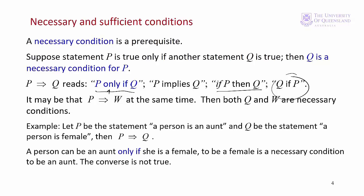We can think of an example here. We have the statement that a person is an aunt is P, the proposition P, and Q is the statement a person is female. Then P implies Q. A person can only be an aunt if she is female. To be female is a necessary condition to be an aunt. The converse is not true. It's not necessary to be an aunt to be female.